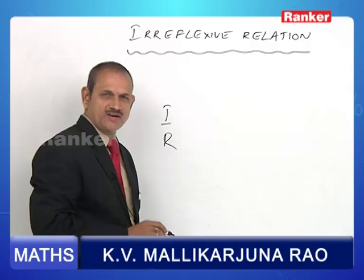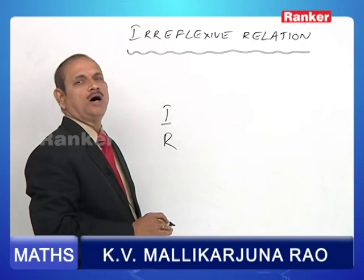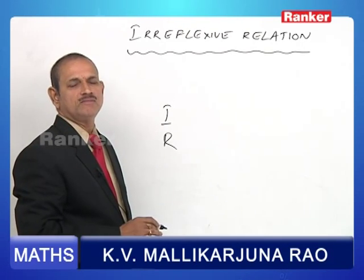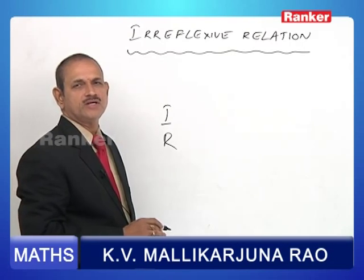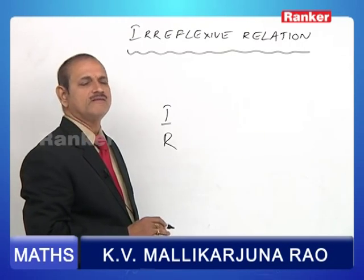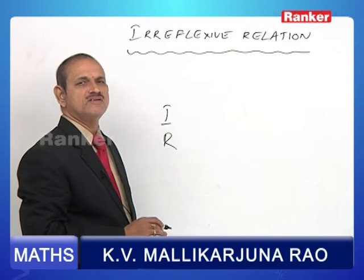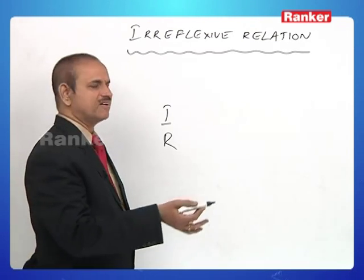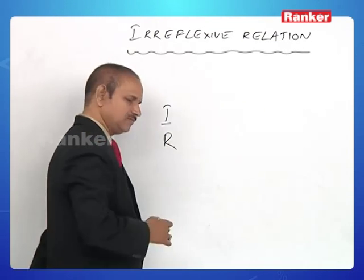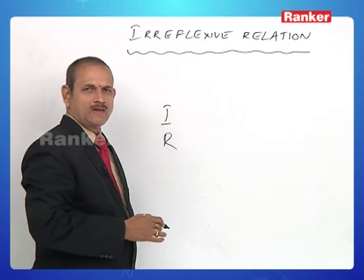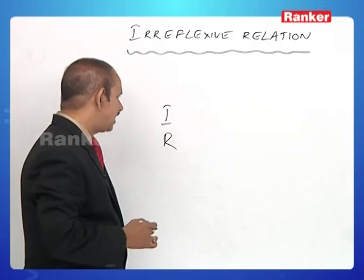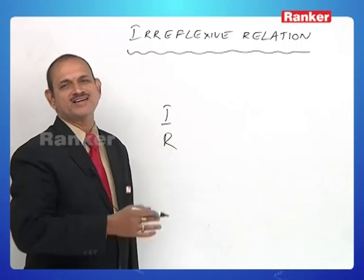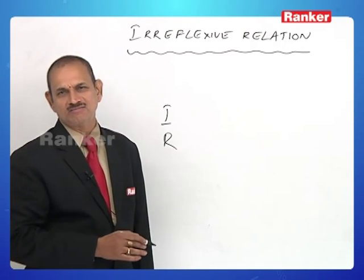Identity relation must contain all the reflexive pairs — (A,A), (B,B), (C,C), (D,D) — whatever element is present in A, its reflexive pair must be in I. And R is a superset of the identity relation.